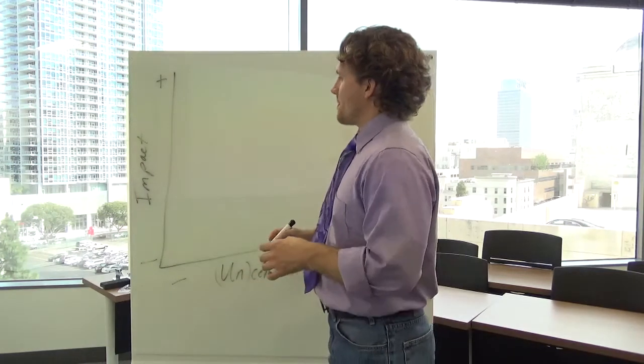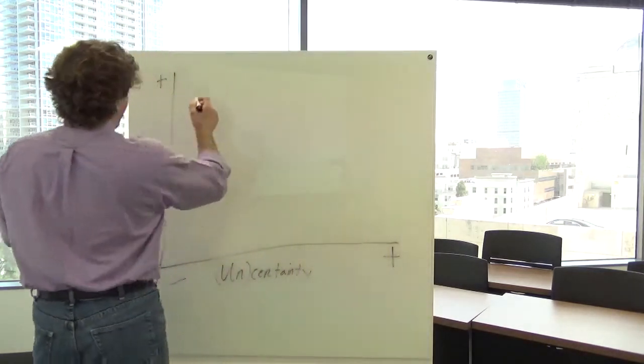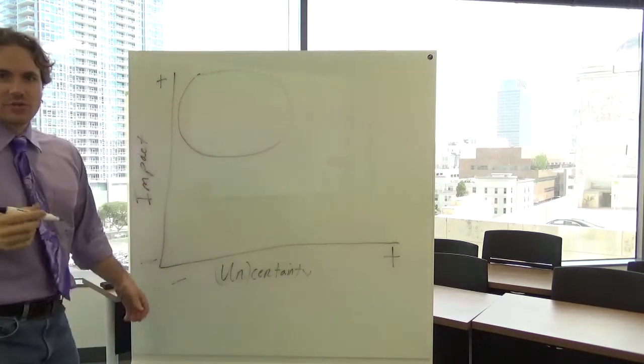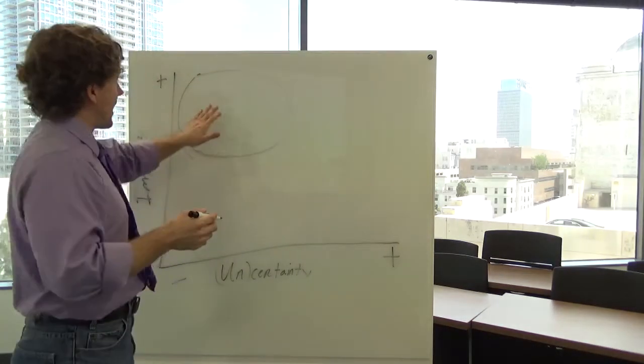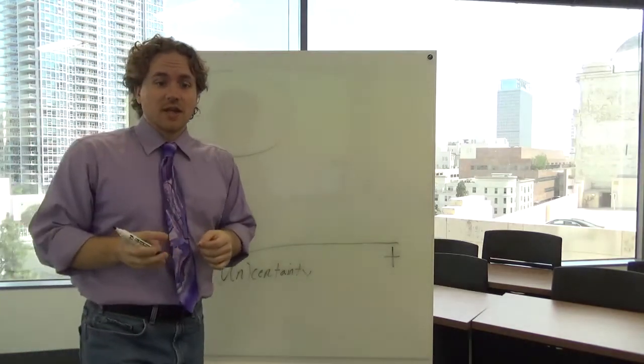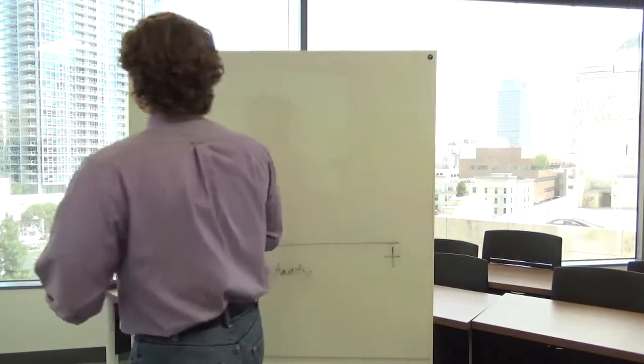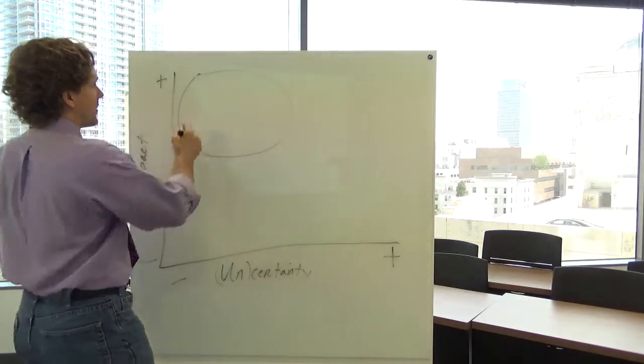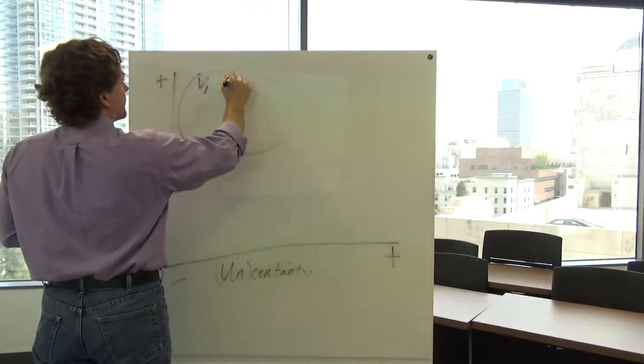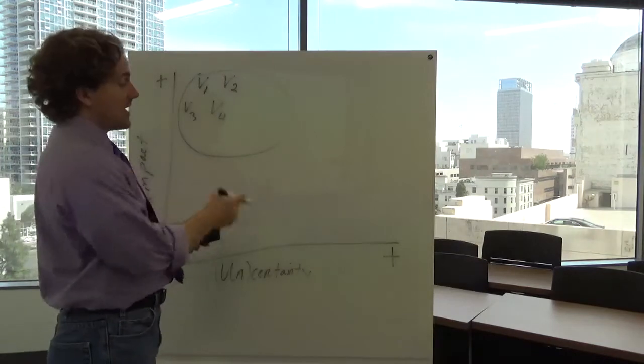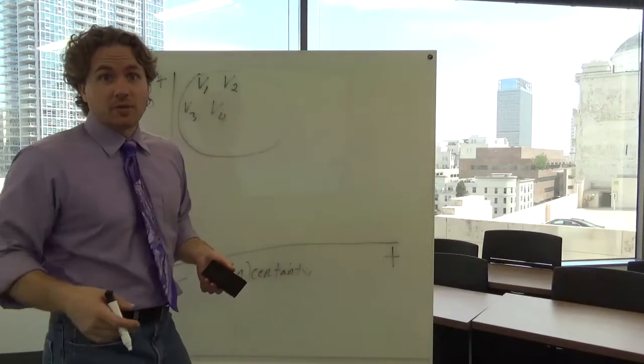Now, what you're going to have in this cloud up here is your key variables. Just as a reminder, your key variables are high impact, high certainty. You've got some choice on how you do it. You can say V1, V2, V3, V4, and then have a legend at the bottom. That's one way of doing it.